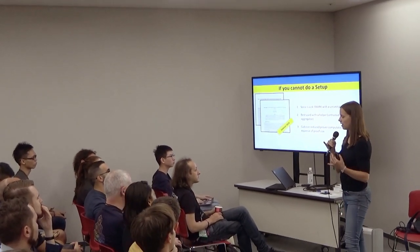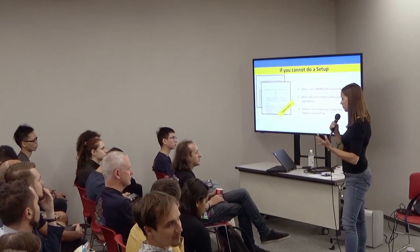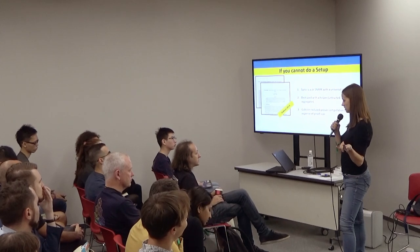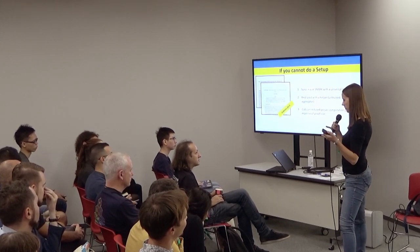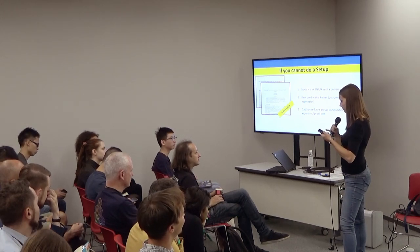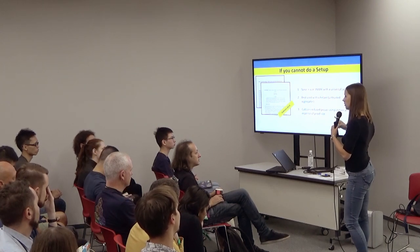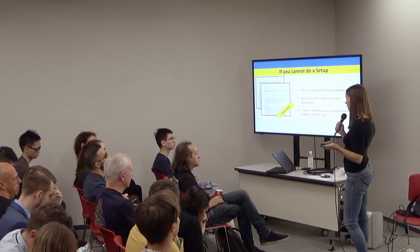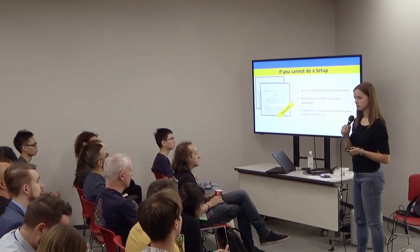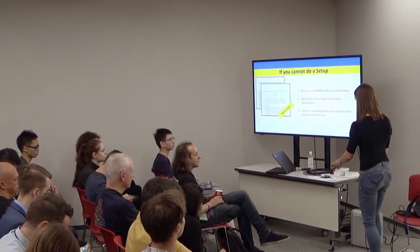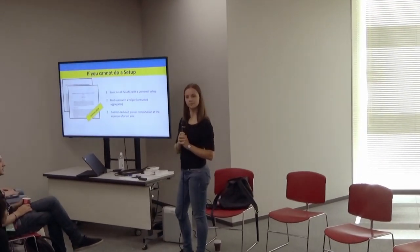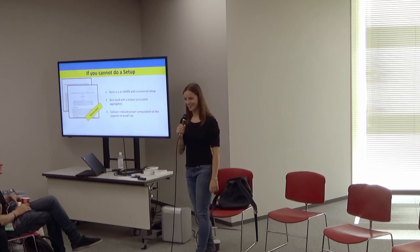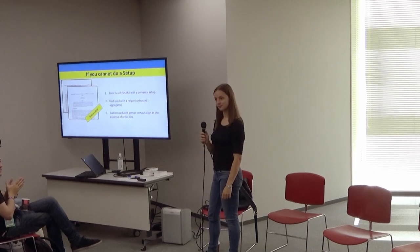One recent work: if you use the bullet proofs inner product argument, then you get a polynomial commitment scheme. This is actually what the work released by Zcash does — they use the bullet proofs inner product argument, which has a downside of linear verification if run as a one-off. But if you're aggregating, you can have that linear verification be a one-off cost and then just a logarithmic factor on top for each individual proof, which means you can get something quite fast in that situation.